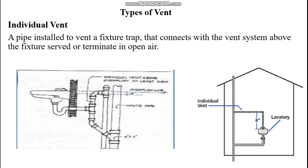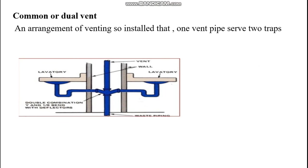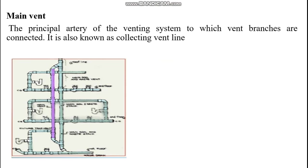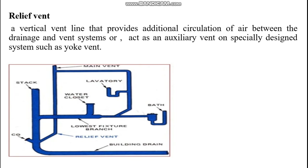Types of vent: Individual vent is a pipe installed to vent a fixture trap that connects with the vent system above the fixture served or terminates in open air. Common or dual vent is an arrangement of venting so installed that one vent pipe serves two traps. Main vent is the principal artery of the venting system to which vent branches are connected; it is also known as the collecting vent line. Relief vent is a vertical vent line that provides additional circulation of air between the drainage and vent systems, or acts as an auxiliary vent on specially designed systems such as a yoke vent.